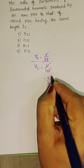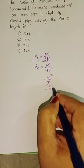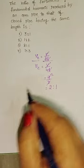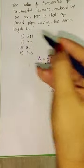4/2 = 2, so that ratio is 2:1. The third option is correct.